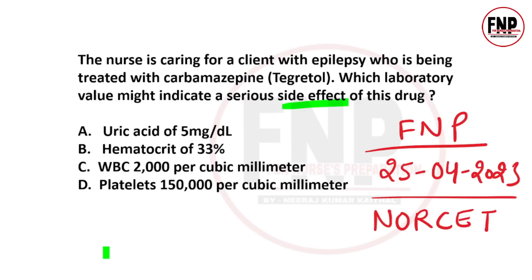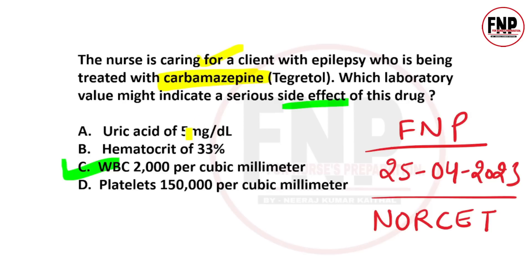The right answer is Option C. When we give carbamazepine to a client for epilepsy treatment, the bone marrow gets suppressed — its functions decrease, leading to reduced WBC production. If a client's lab report shows WBC count lower than normal, it means carbamazepine drug toxicity has developed.